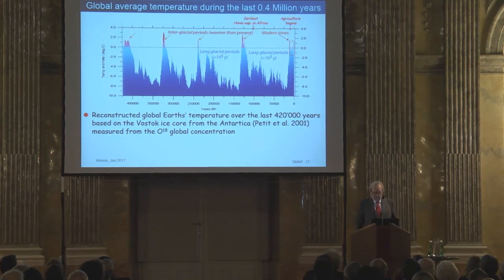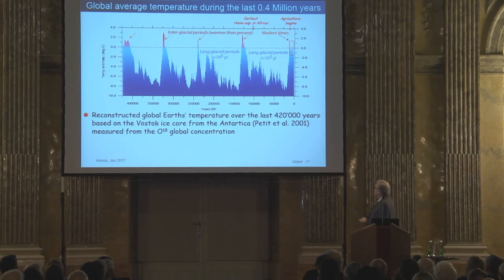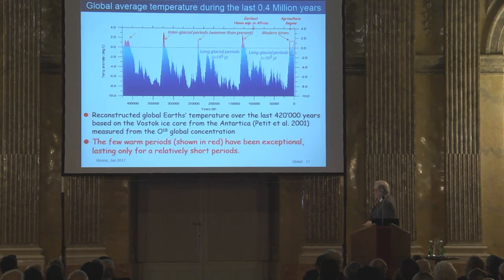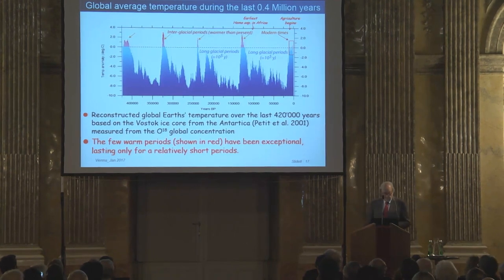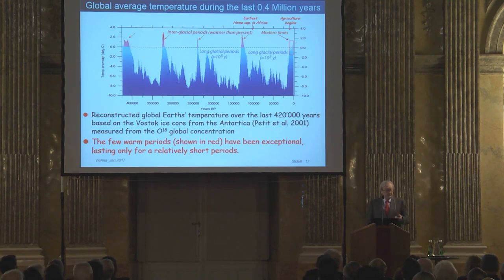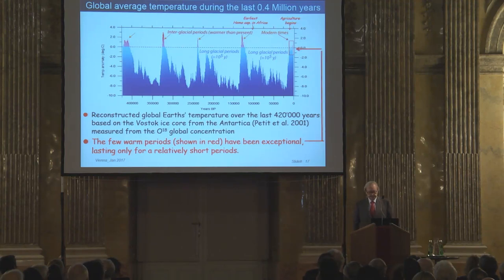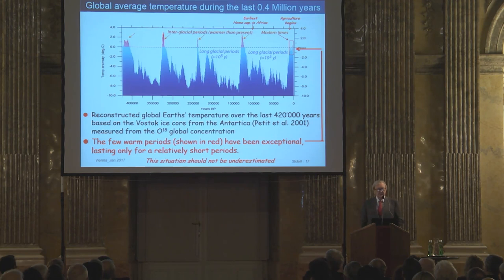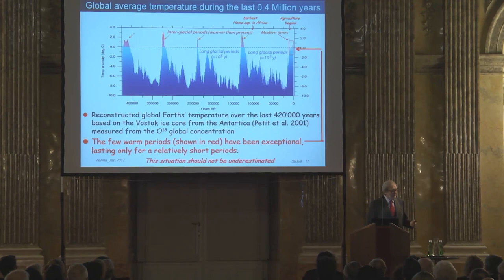Therefore there are very few warm periods, shown in red, which have been exceptional, lasting only for a relatively short time — only a few percent of the total time. This is how the Earth behaved before the arrival of man. The situation should not be underestimated, because the past behavior of the Earth is very similar to what will presumably happen also in the future.